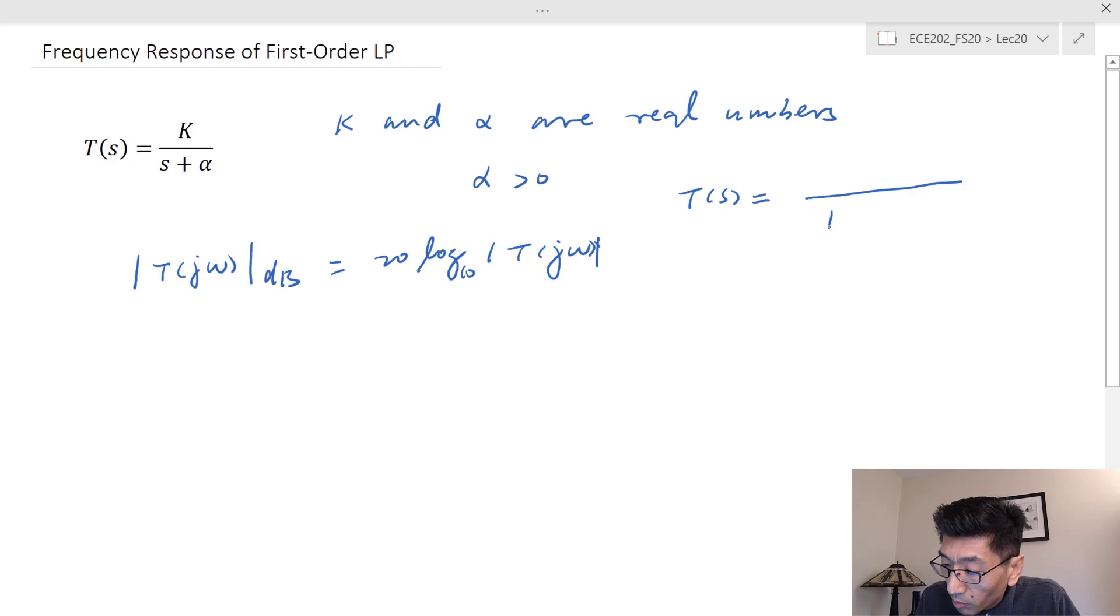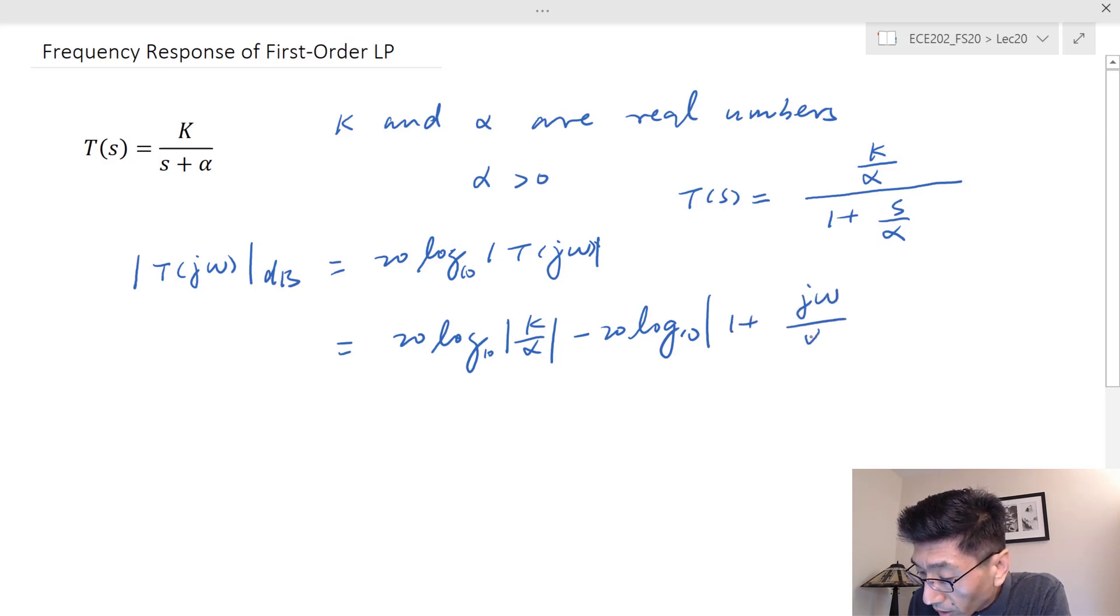I will divide the numerator and denominator by alpha. I get 1 plus s/α in the denominator, and on the numerator I get k/α. In this case, the gain is going to be 20 log of k/α. Remember, if we have the ratio of two functions and take the log, that becomes subtraction instead of division. In this case, minus 20 log of 1 plus jω/α.